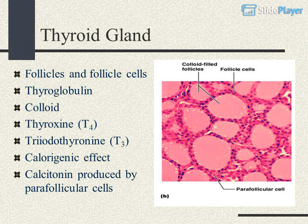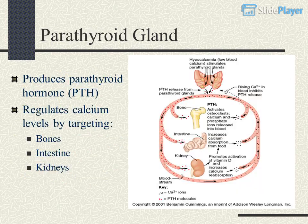Parathyroid gland produces parathyroid hormone (PTH), which regulates calcium levels by targeting bones, the intestine, and the kidneys.